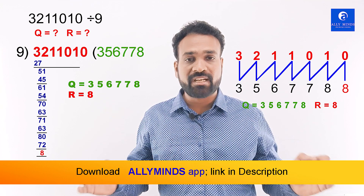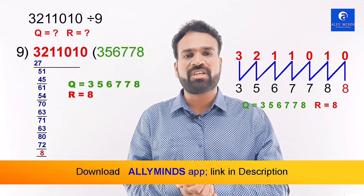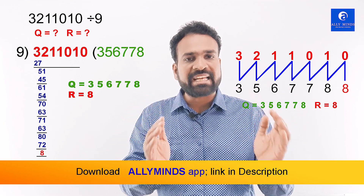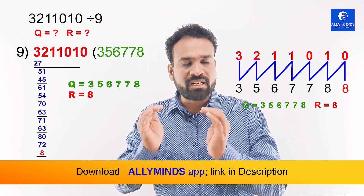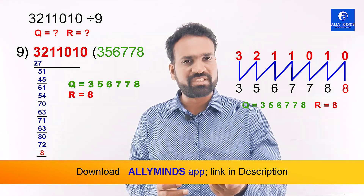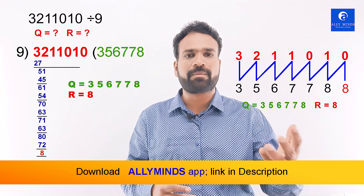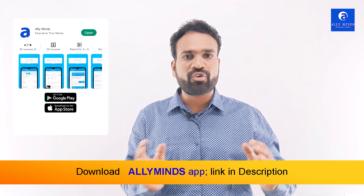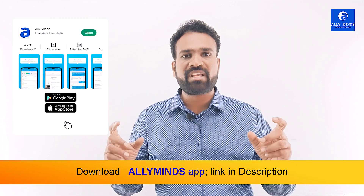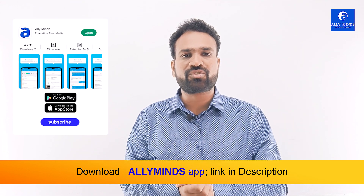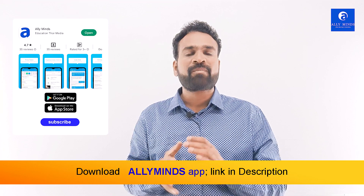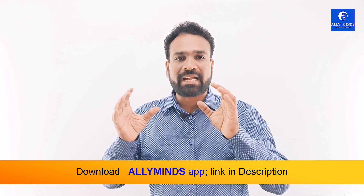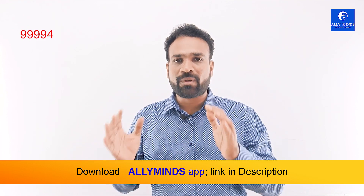So, why is it so simple? Now let's do one more example: 999994 × 999996.